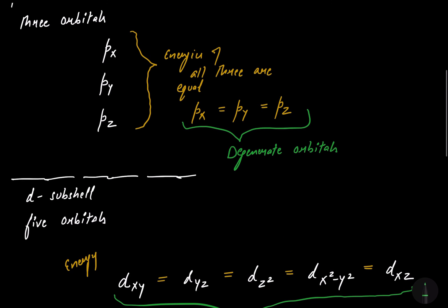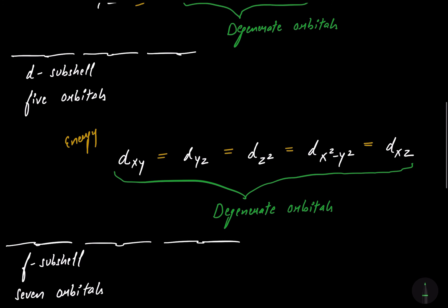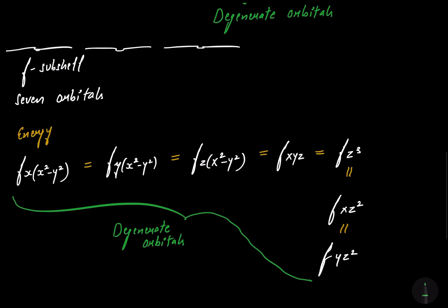Px, Py, Pz are orbitals of the P subshell, hence they are degenerate. Dxy, Dyz, Dz², Dx²−y², and Dxz — these five are orbitals of the D subshell, hence they are degenerate. For the F subshell: fx(x²−y²), fy(x²−y²), fz(x²−y²), fxyz, fz³, fxz², and fyz² — these seven orbitals belong to the F subshell only, hence they are degenerate.